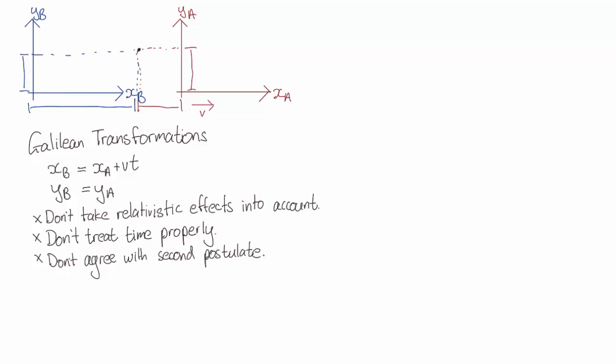Lastly the Galilean transformations don't agree with the second postulate. So if I was running at half the speed of light and then I turned on a torch pointing forwards emitting photons at the speed of light, Galilean transformations would suggest that someone standing and watching me would see those photons moving at one and a half times the speed of light.